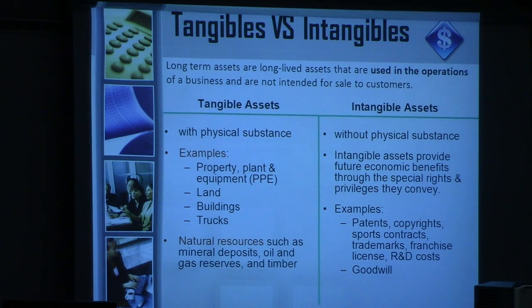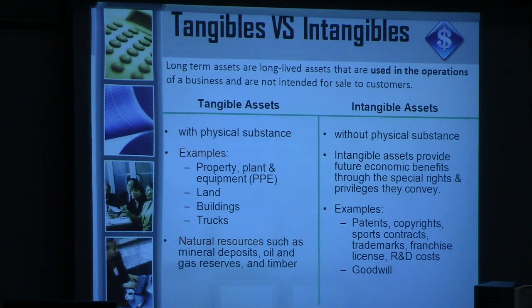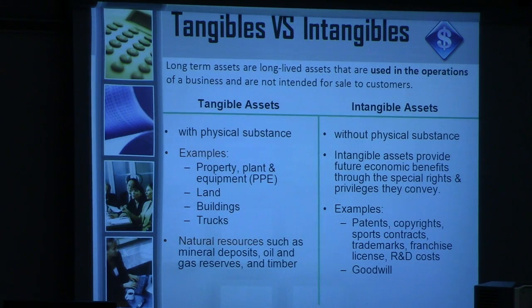In the notes section, companies describe how PPE is calculated and categorize all the assets within it. Land is a special asset because it cannot be amortized. Buildings are another example of tangible assets. Natural resources are also tangible assets — mining companies, fishing companies, lumber companies, and oil companies would often have natural resources as their biggest asset.